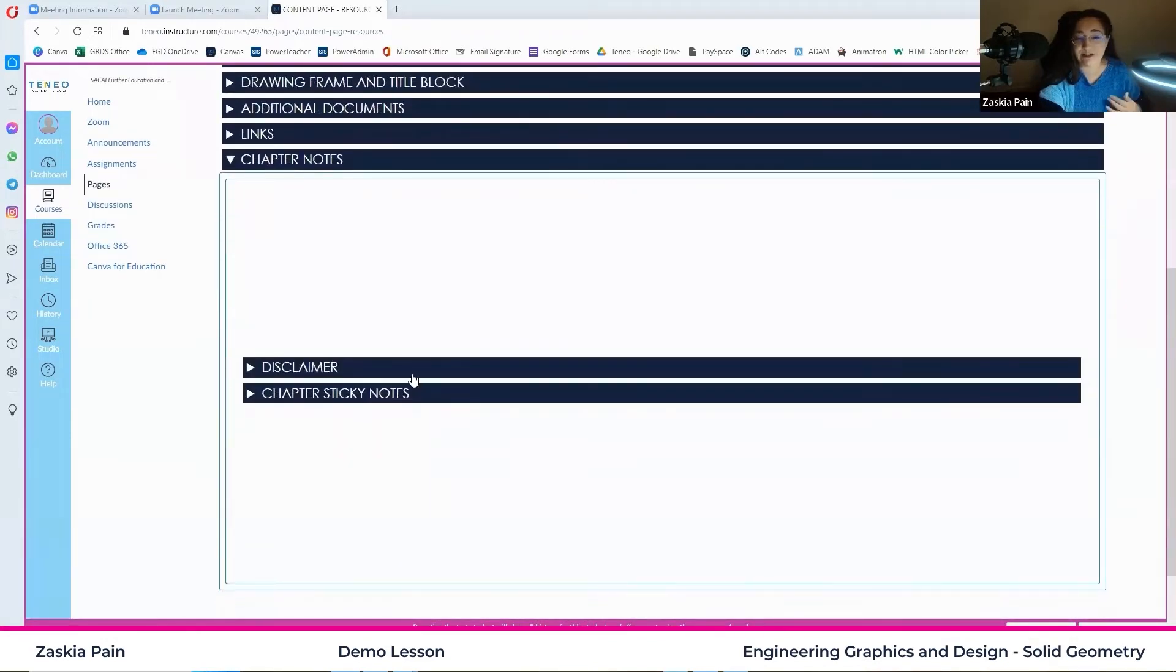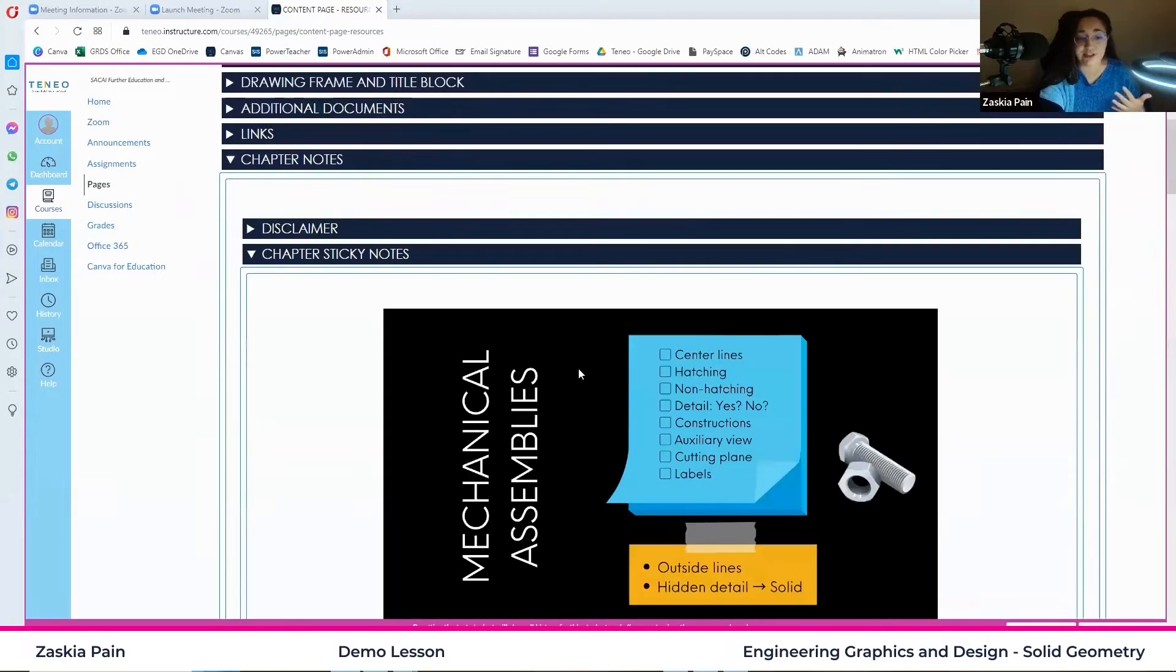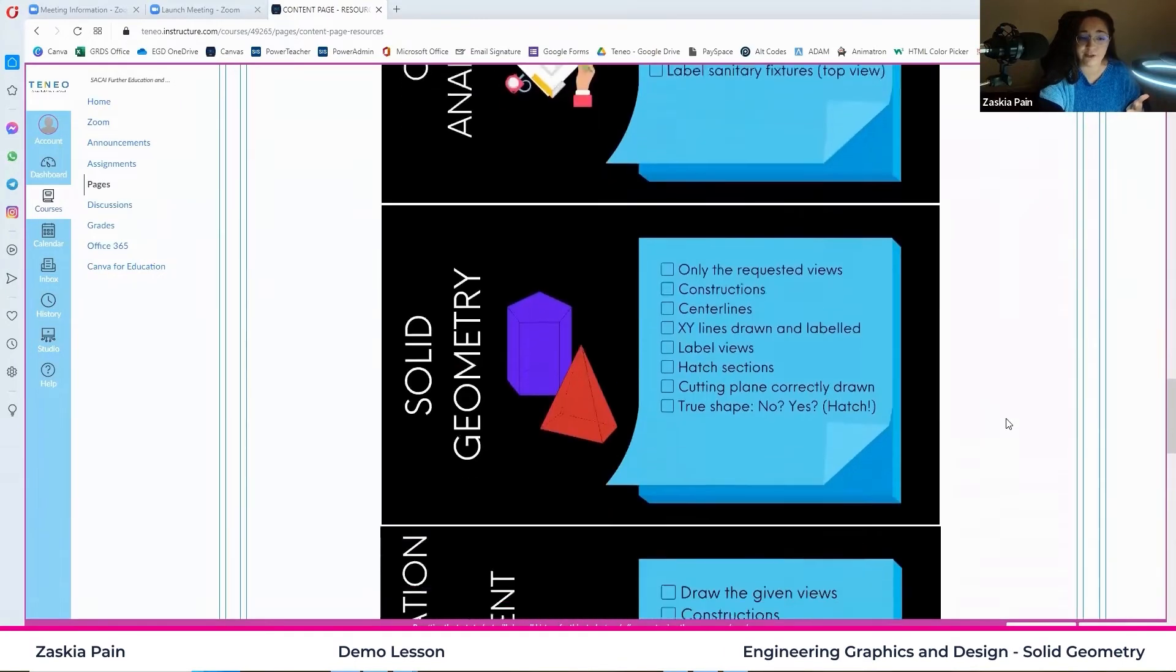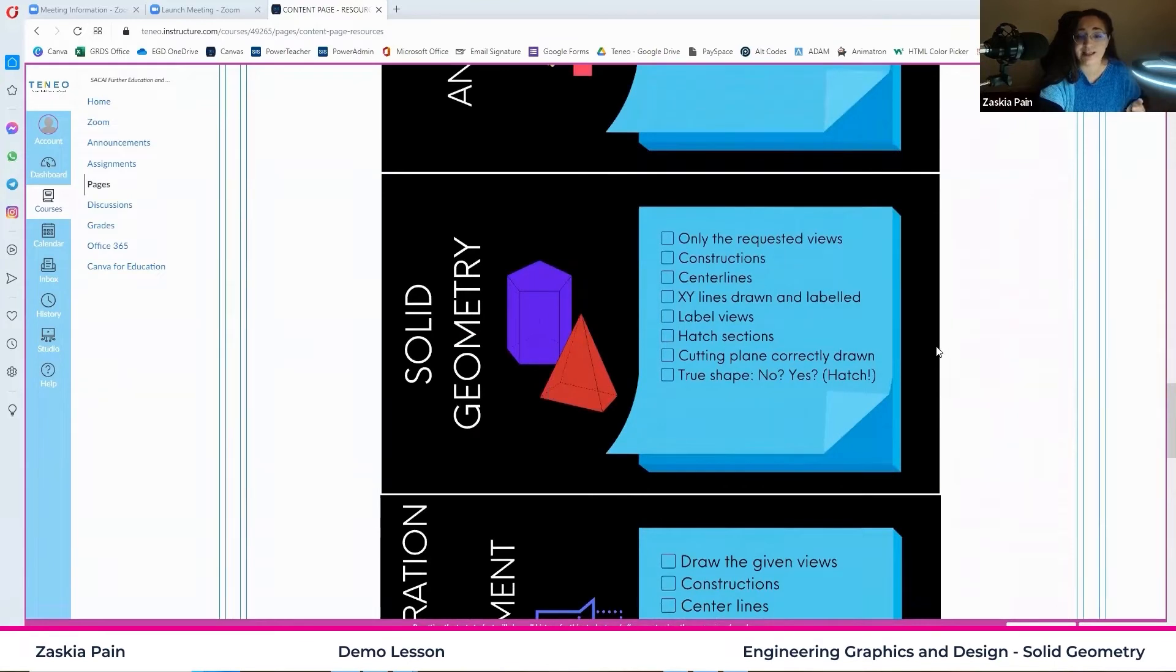There you will find a disclaimer saying that you cannot use this during a test or an exam. And you can scroll all the way until you find solid geometry. There's a little checklist that you can memorize and make sure that all of those aspects are on your drawing. So that's a way that you can double-check yourself before you submit your drawings.